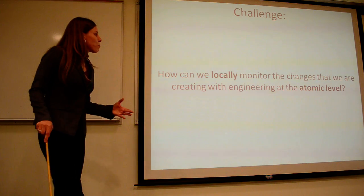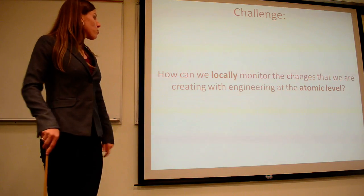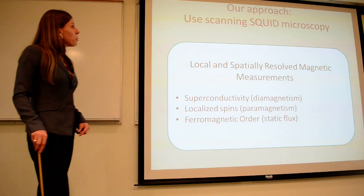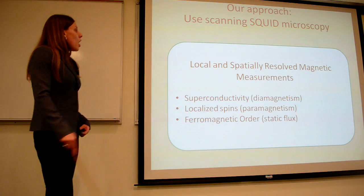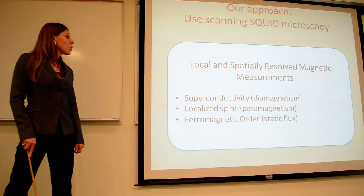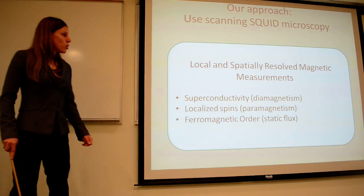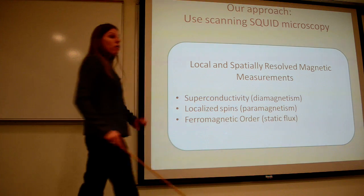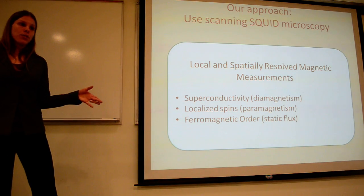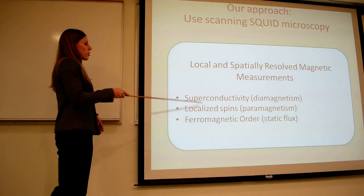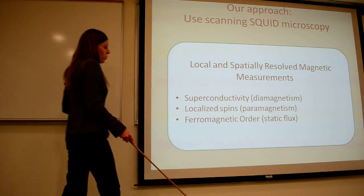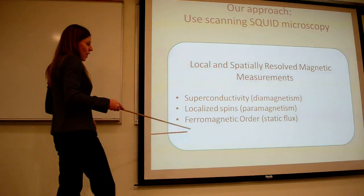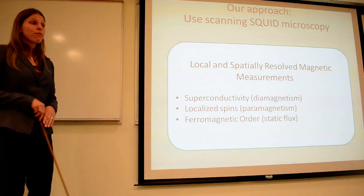So the challenge that I'm proposing is how can we locally monitor the changes we're creating with engineering at this atomic level? And so the approach used by our group is to use scanning squid microscopy. What scanning squid microscopy allows you to do is make local and spatially resolved magnetic measurements. And so in this case, the specific magnetic measurements we're making is measurements of diamagnetism, paramagnetism, or just flux. And these map directly onto the physics that you might find in a sample. Specifically, superconductivity is going to manifest itself as a diamagnetic signal for us. If we have any kind of localized spins, there are going to be a paramagnetic signal, and any kind of underlying ferromagnetic order is going to be some kind of static flux signal.